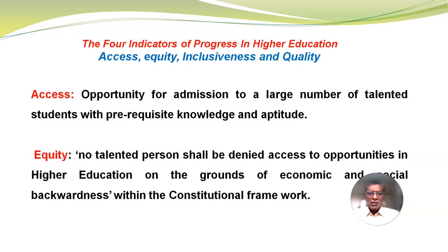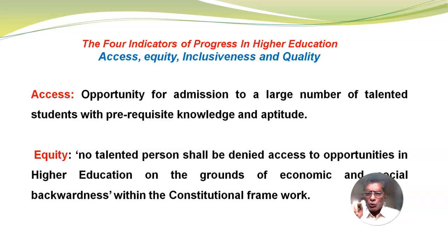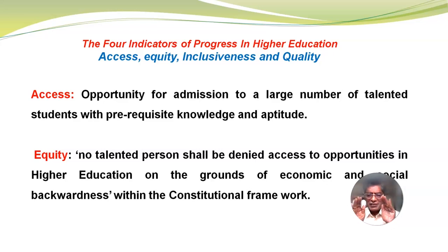Now I would like to discuss the four indicators of progress in higher education: access, equity, inclusiveness and quality. Access means the opportunity for admission to a large number of talented students with prerequisite knowledge and aptitude. Equity means no talented person shall be denied access to opportunities in higher education on the grounds of economic and social backwardness, within the constitutional framework.